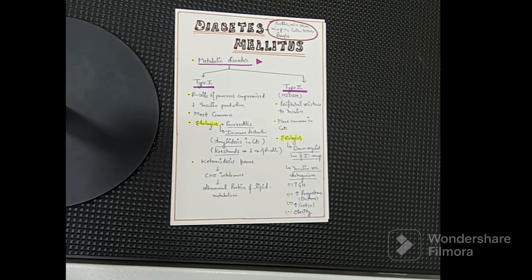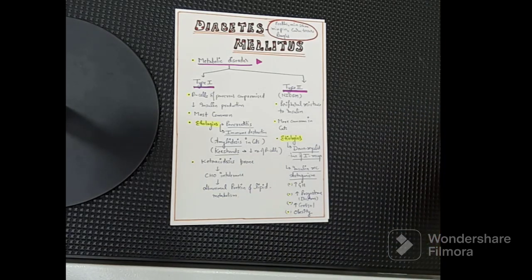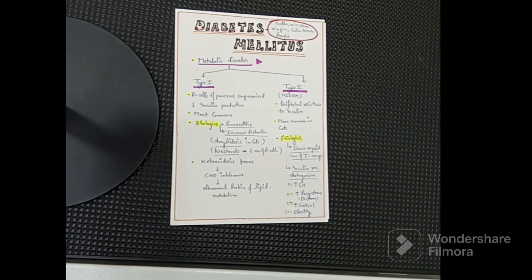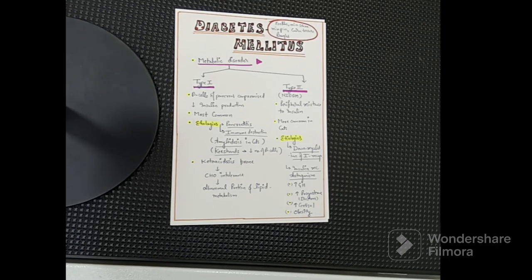The other type is Type 2, that is non-insulin dependent diabetes mellitus. In this type there will be peripheral resistance to insulin — meaning insulin production is optimum, but somehow the receptors are not responding to insulin. Either it is resistance or antagonism. This type is more common in cats.